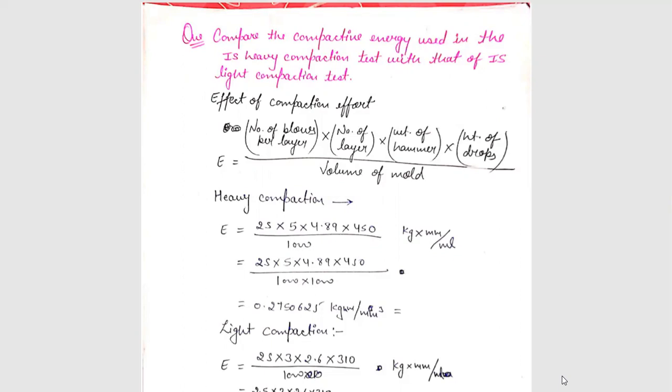Firstly, we will find out the compactive energy for heavy compaction test. E equals to 25. In the heavy compaction test, the number of blows is 25, number of layer is 5, weight of hammer is 4.89 and the height of drop is 450. And the volume of mold is 1000 ml. These all value in kg into ml upon ml.